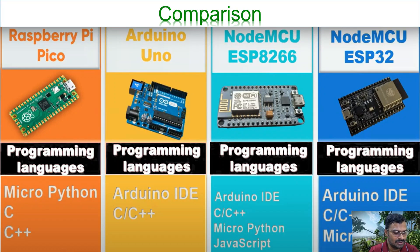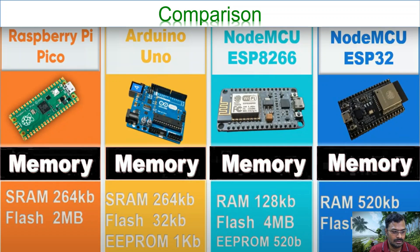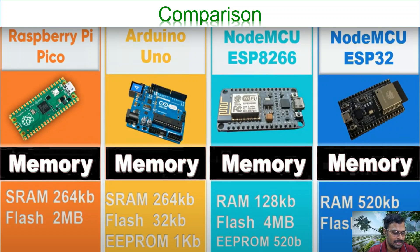For programming languages, MicroPython and C/C++ can be used for Raspberry Pi Pico. Arduino Uno uses only C/C++, while NodeMCU also supports MicroPython, JavaScript, and other languages. For RAM, Raspberry Pi Pico has 264 KB static RAM, similar to Arduino Uno. NodeMCU ESP32 has 128 KB but with 4 MB flash memory, while Raspberry Pi Pico has 2 MB flash. Arduino Uno has only 32 KB flash but does have EEPROM, which is not available in the other boards.